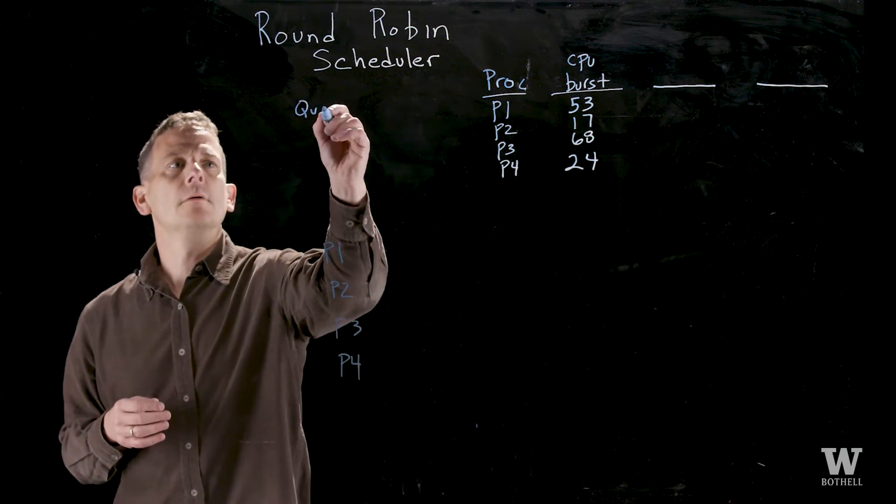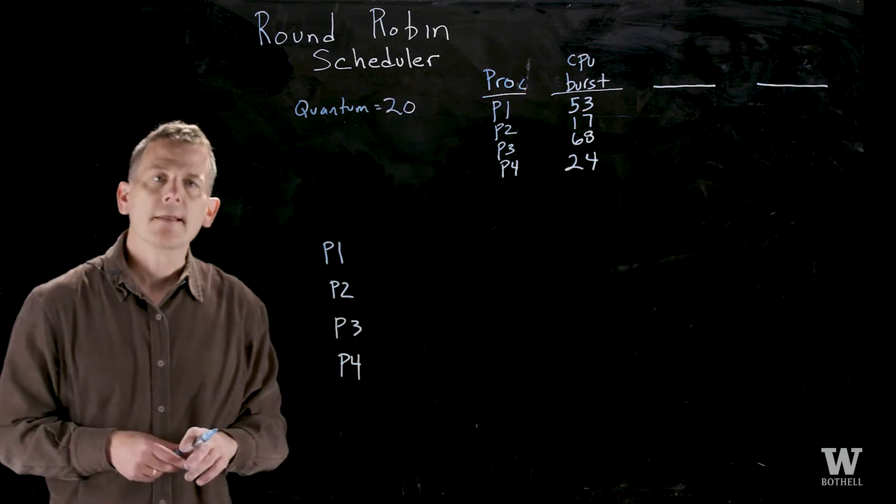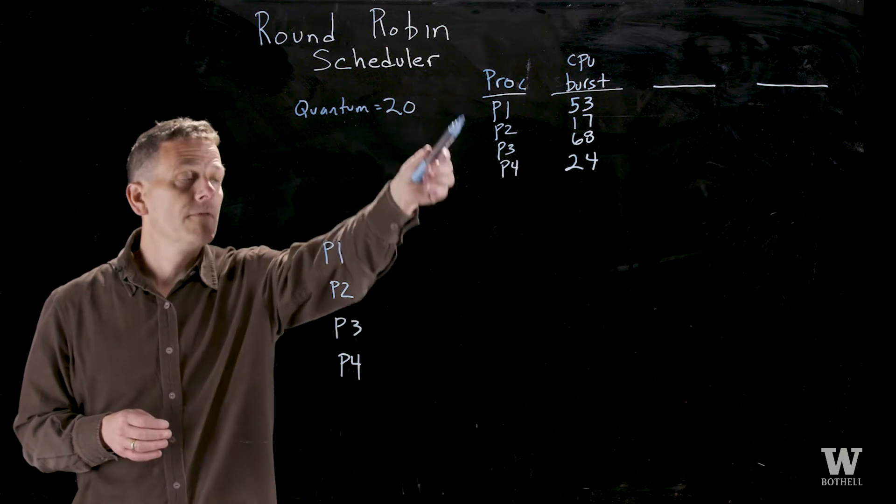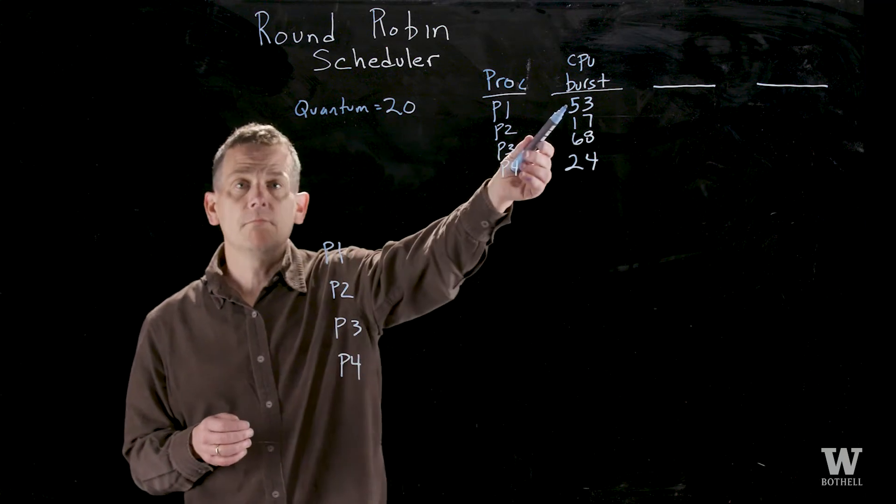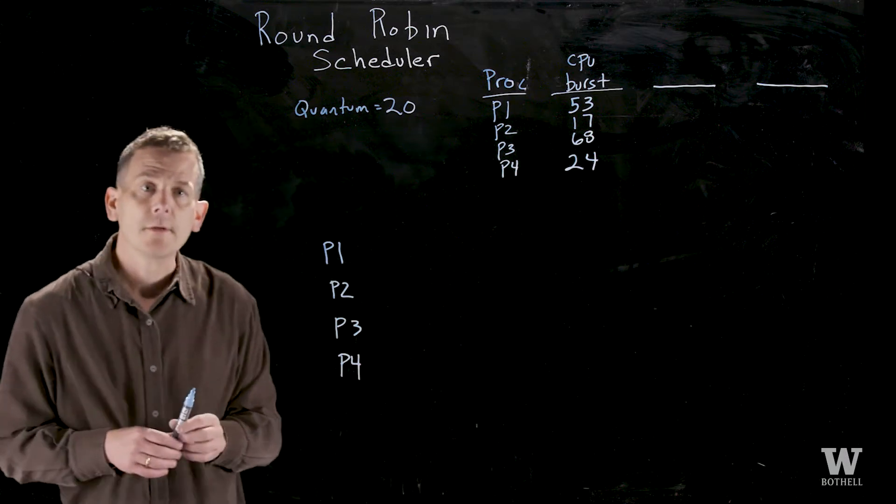So let's take an example where we have a time quantum of 20 units and let's see if we can schedule these four processes which require the following CPU bursts. Process 1 requires 53, all the way down, process 4 requires 24 CPU to finish.